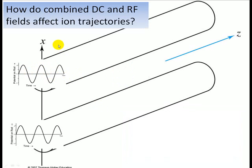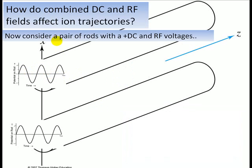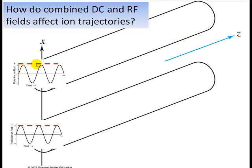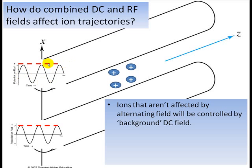So now let's look at the combination of DC, direct constant voltage, and alternating voltage on the ion. So in red here, I've got the DC voltage, what it's doing. So it's this constant while the alternating voltage goes up and down as it's on the last slide. So let's look at these ions.